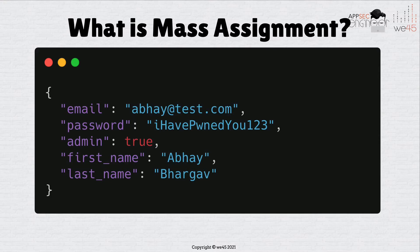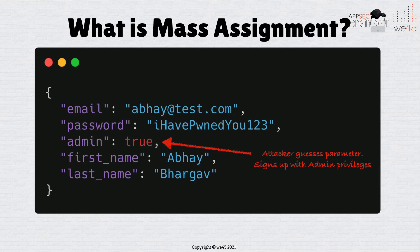All I have to do is send a JSON request that looks like this: email, password, first name, last name — and I've set admin to true. Since I guessed the parameter admin and set it to true, because of the way my developer has written code, I've been able to escalate privileges and sign up as the administrator. From that point on, I have admin privilege on that application, which can be a huge escalation of privileges.